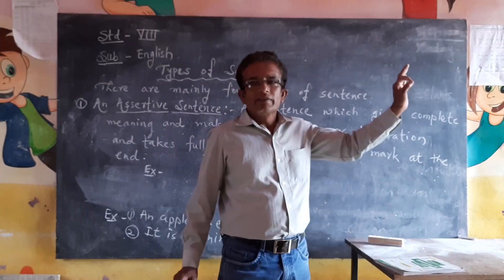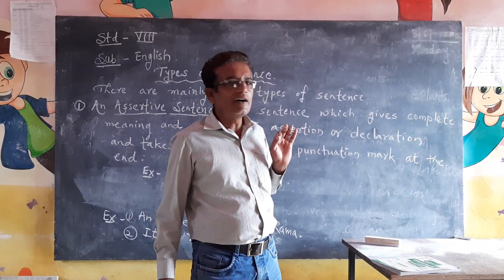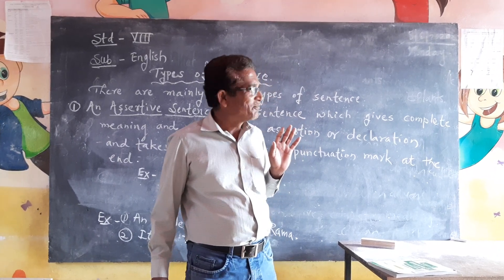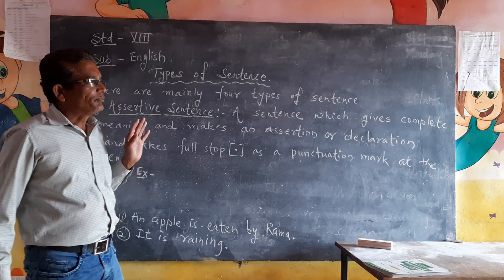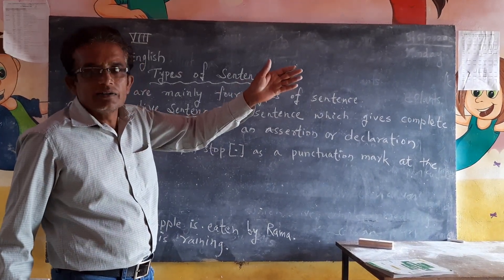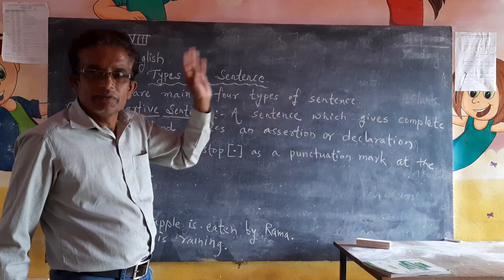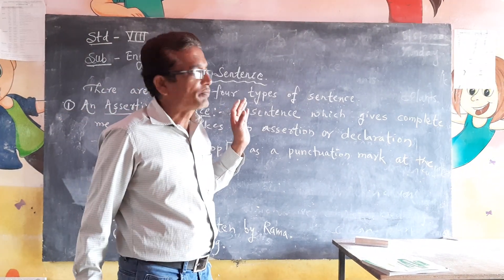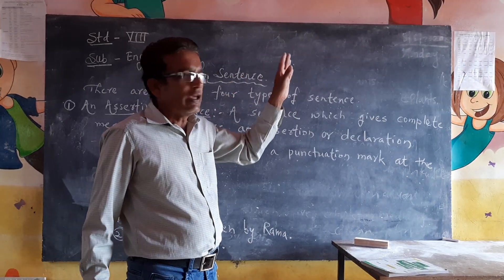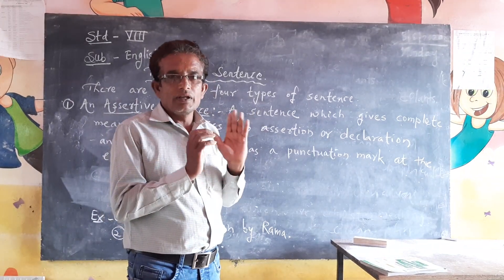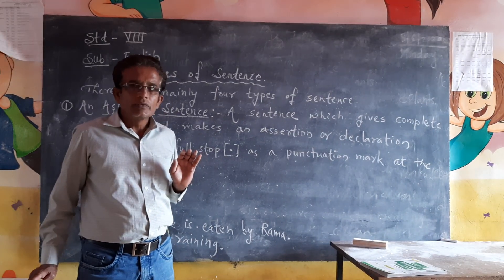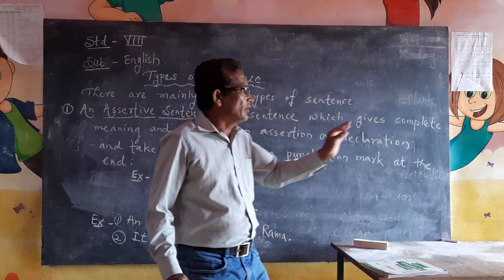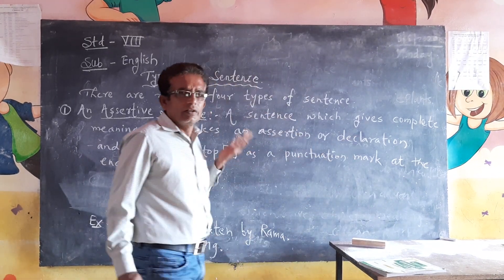Example 3: The birds are chirping happily on the tree. The leaves are moving hither and thither because of the heavy wind. Example 4: The dogs are enjoying the rain on the ground. There are so many sentences you can make like these.